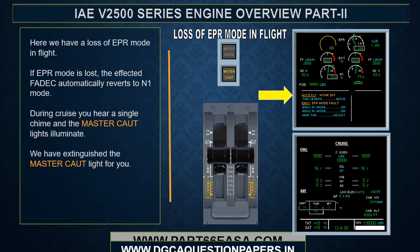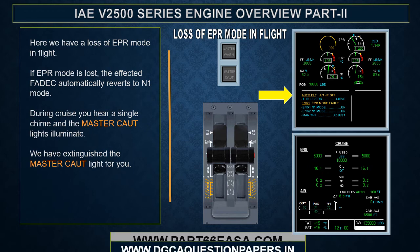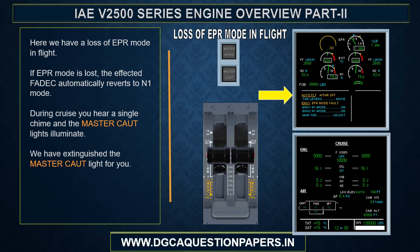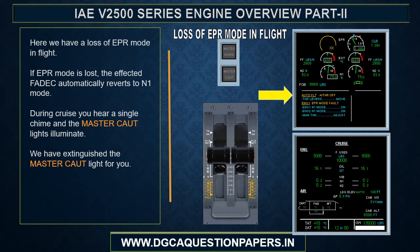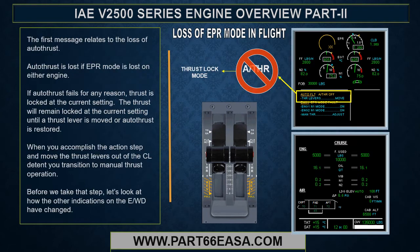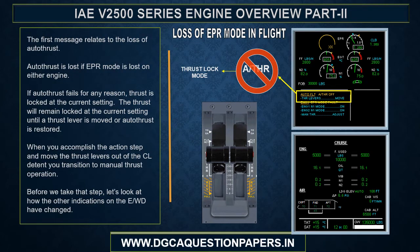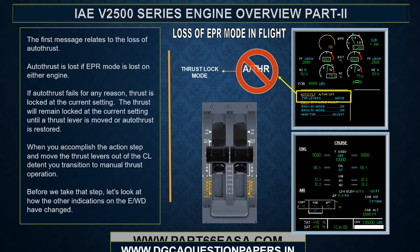Here we have a loss of EPR mode in flight. If the EPR mode is lost, the affected FADEC automatically reverts to N1 mode. During cruise, you hear a single chime and the master caution lights illuminate. The first ECAM message relates to the loss of autothrust — autothrust is lost if EPR mode is lost on either engine.